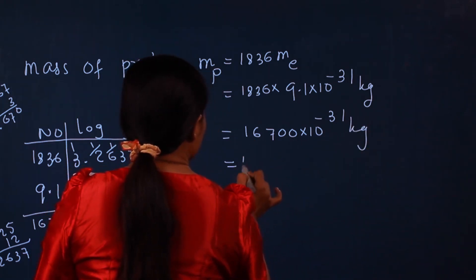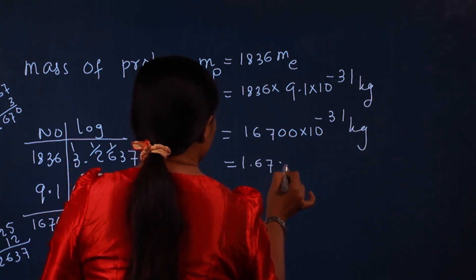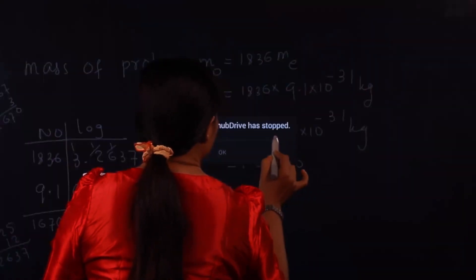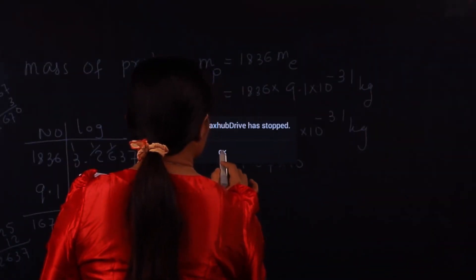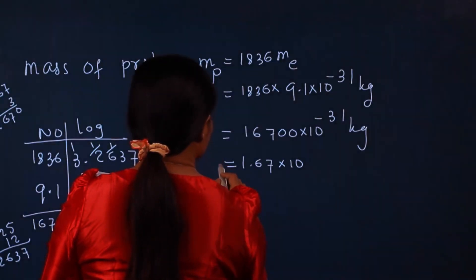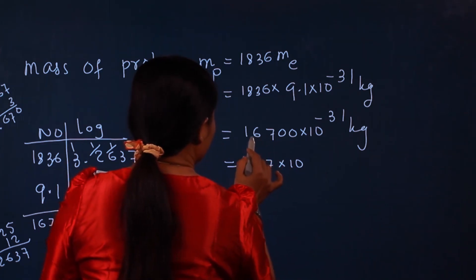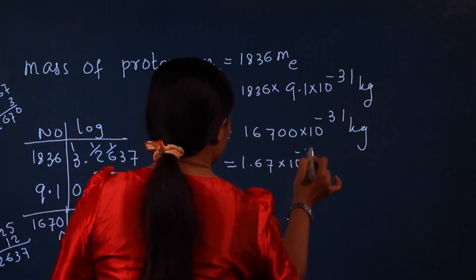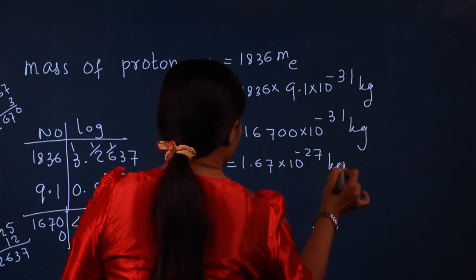The mass of the proton is 1.67 × 10 to the power minus 27 kg.